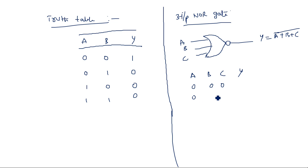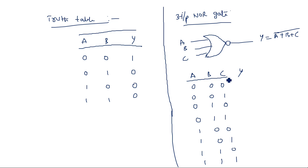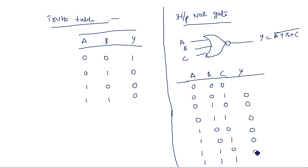The truth table values are: 0,0,0 → 1; 0,0,1 → 0; 0,1,0 → 0; 0,1,1 → 0; 1,0,0 → 0; 1,0,1 → 0; 1,1,0 → 0; 1,1,1 → 0. In OR operation, if all inputs are 0s, output is 0; if any input is 1, output is 1. For NOR gate it is the opposite: if all inputs are 0s, output is 1; if any one input is 1, output is 0. So except for the first case, all remaining cases have output 0.